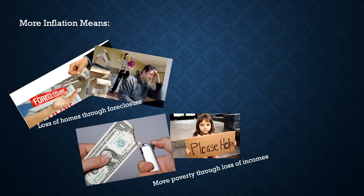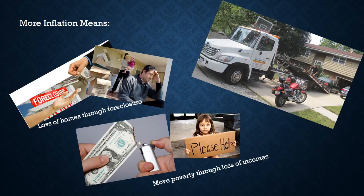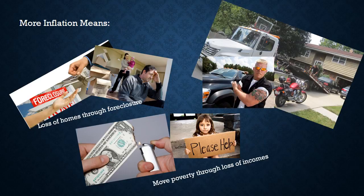Not just homes — if people can't make loan payments, sometimes they have their automobiles repossessed too. These are the kinds of phenomena we see in a period of high inflation, when people can't keep up with their costs. It's costing more and more money to buy groceries and feed a family, and suddenly there's no money to make a car payment or house payment.